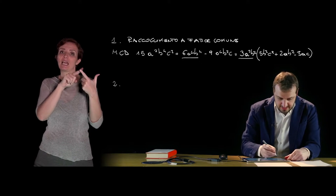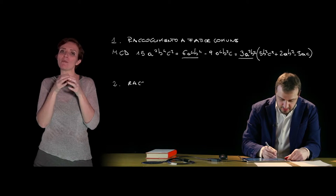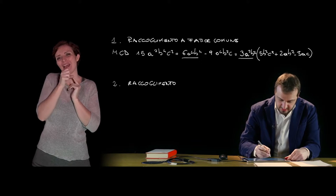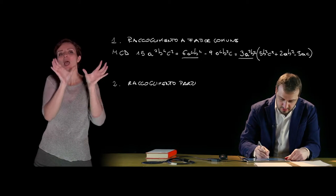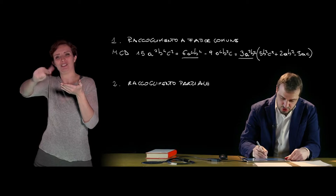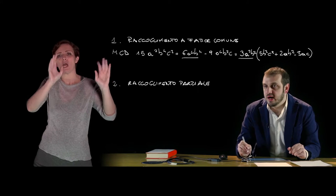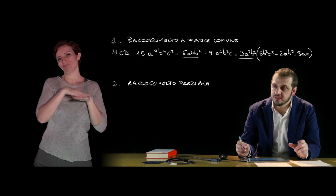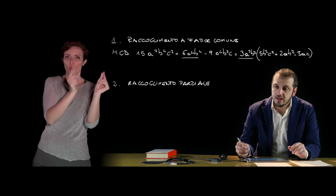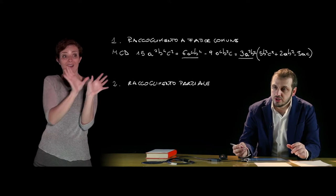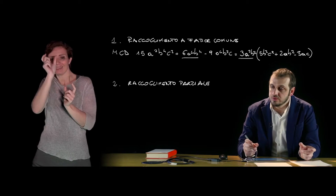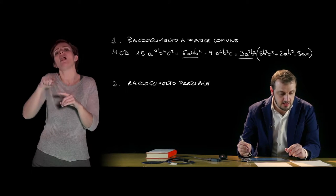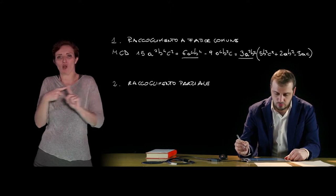Il secondo metodo è il raccoglimento parziale. Il raccoglimento parziale non riguarda tutti i termini del polinomio, ma viene fatto quando i termini sono in numero pari — più spesso quando sono 4. Consente di raccogliere a coppie di termini, da 2 a 2, un fattore che tra parentesi restituisce termini identici tra di loro. In questo modo sarà possibile effettuare un ulteriore raccoglimento e sviluppare il prodotto.